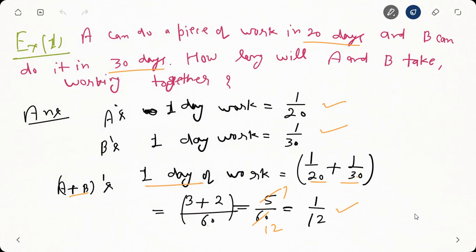Based on these two concepts, let's do some examples. The first question: person A can do a piece of work in 20 days and person B can do it in 30 days. How long will A and B take working together? From the question, A's one day work is one by twenty and B's one day work is one by thirty. So A and B's combined one day work is one by twenty plus one by thirty. Taking the LCM of twenty and thirty, which is sixty.